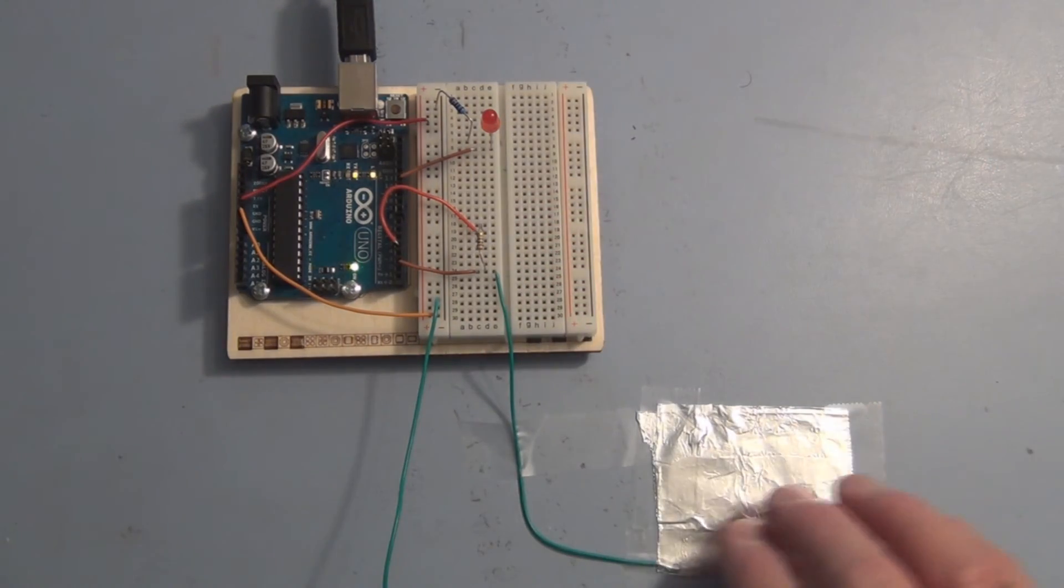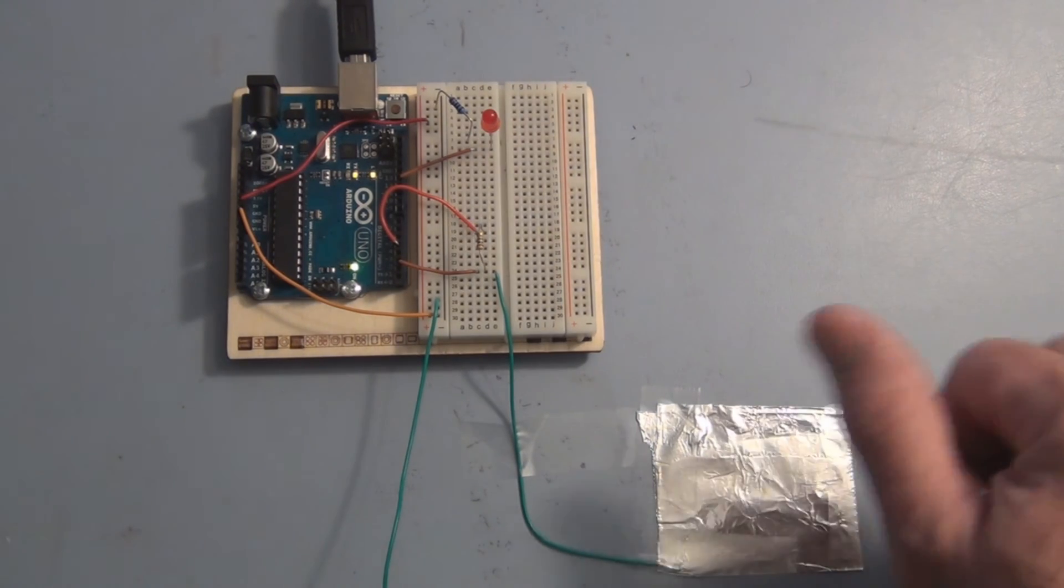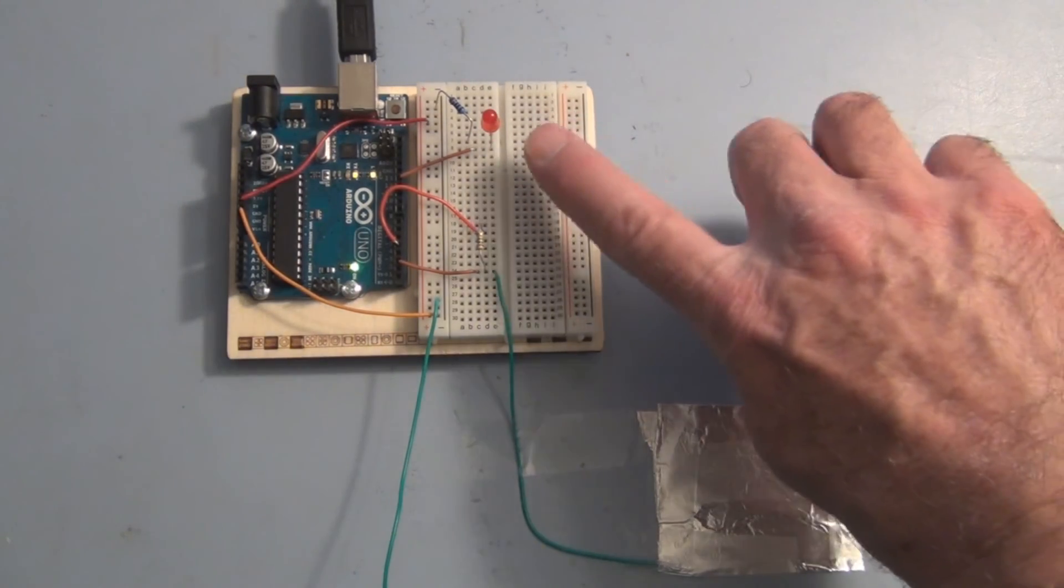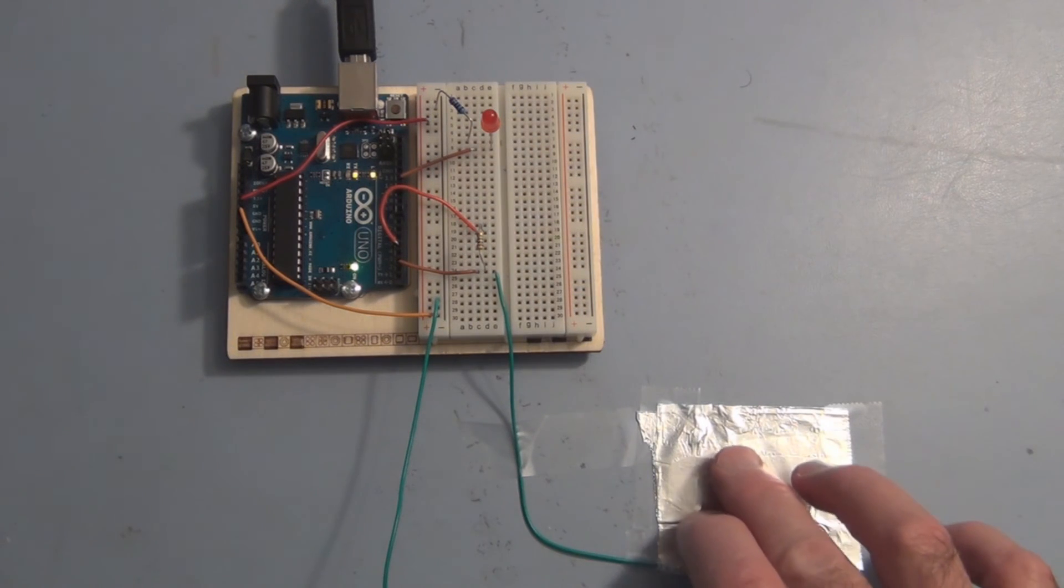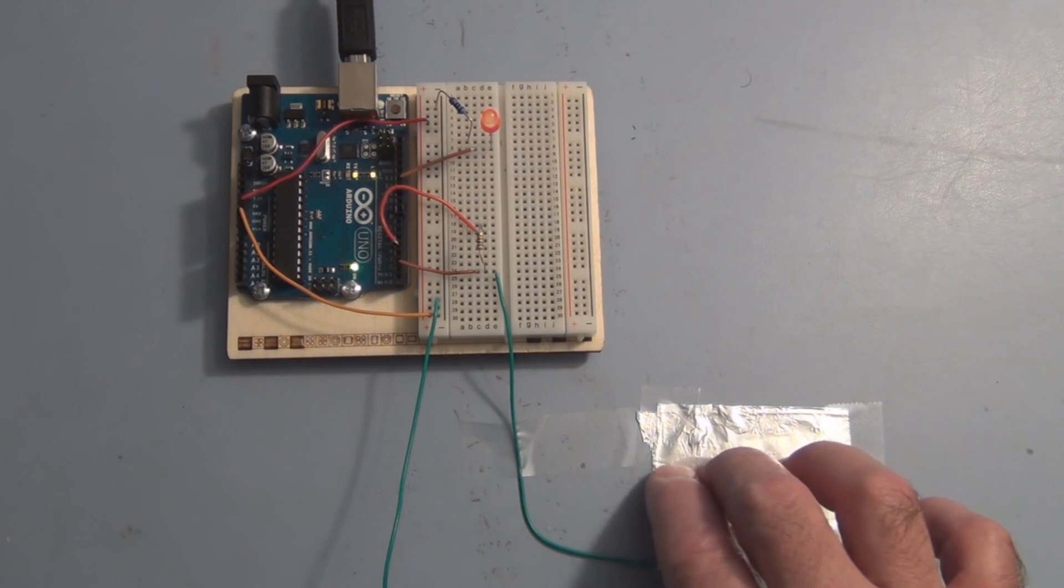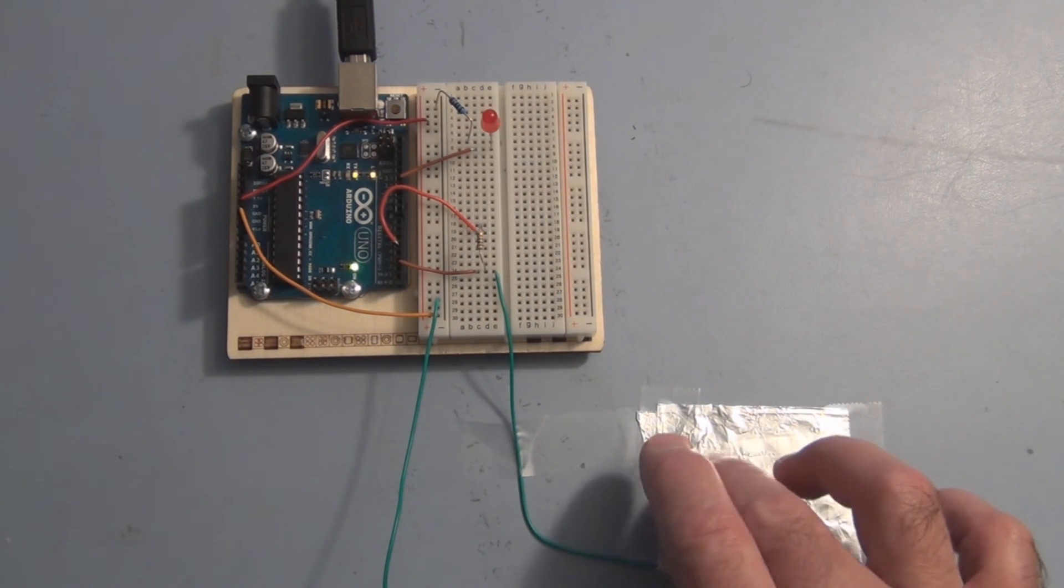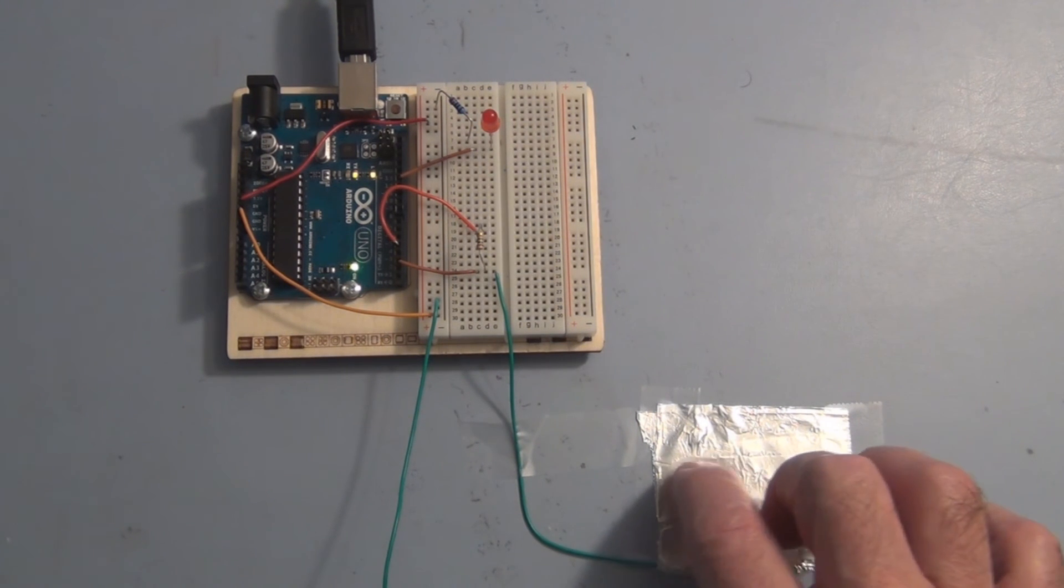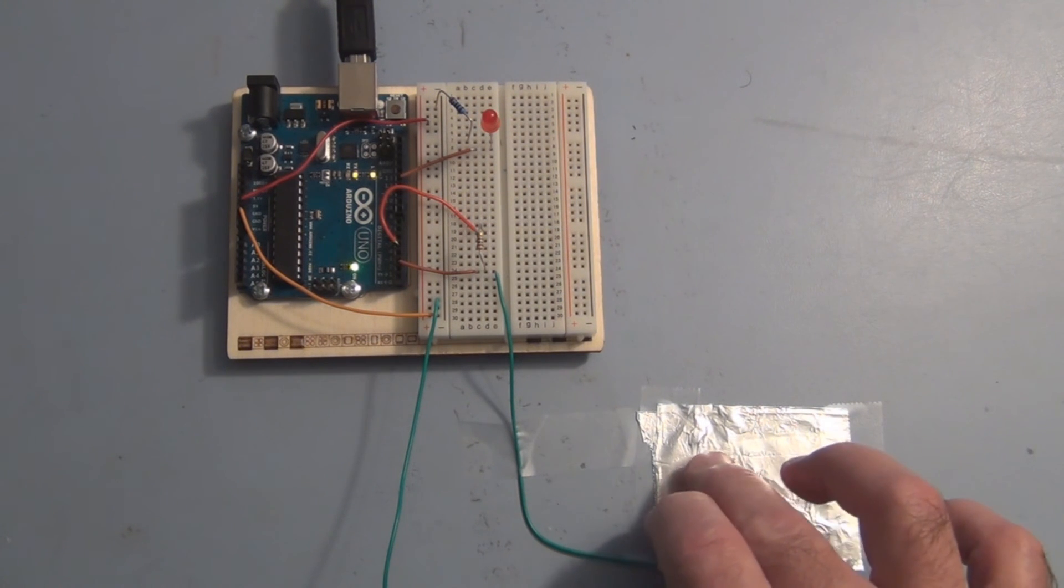But as I add my body capacitance, we're going to exceed a limit that's going to turn on this red LED. You can see here just from touching this piece of foil and the use of the capacitive sensor library, we're getting that to respond. That's pretty interesting.